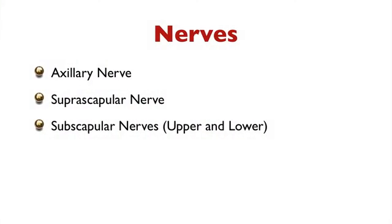When it comes to the innervations, there are three main names I want you to remember: the axillary nerve, the suprascapular nerve, and the subscapular nerves. With the subscapular nerves, they are the upper and lower subscapular, or you can call them the superior and inferior subscapular. We're dealing with the shoulder muscles, and the scapula is a big part of that. So the suprascapular nerve and subscapular nerves are the nerves that will be doing the innervations of the intrinsic shoulder muscles.